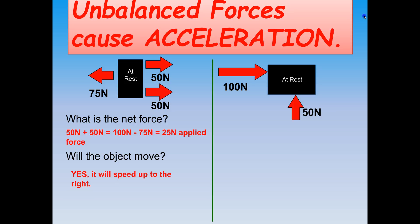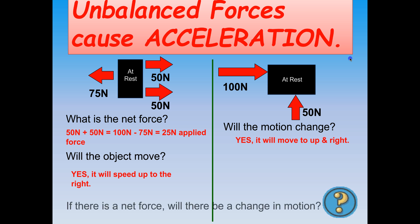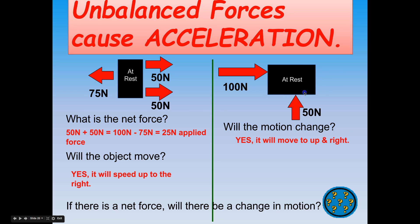This diagram shows two forces acting on a box at rest. Will these forces cause a change in motion? Yes. The box is going to move up and to the right — more to the right than up because of the 100 newtons pushing to the right, with a smaller upward force from below. So if there is a net force, the forces are unbalanced and there will be acceleration — whether it be speeding up, slowing down, or in this case a change of direction.